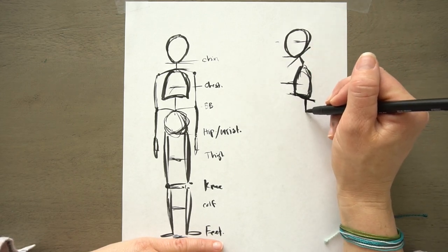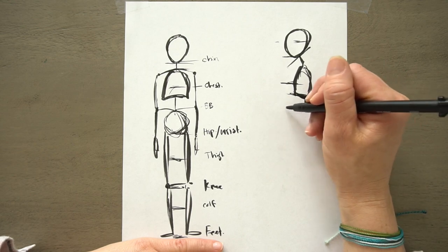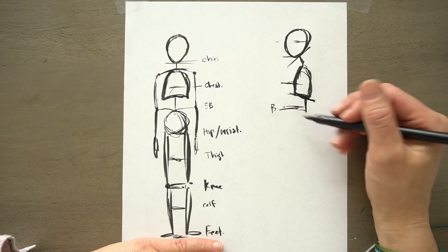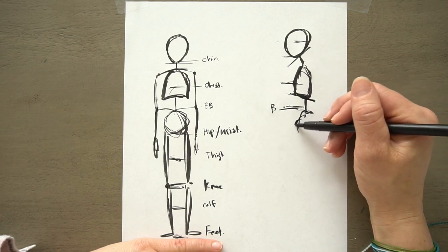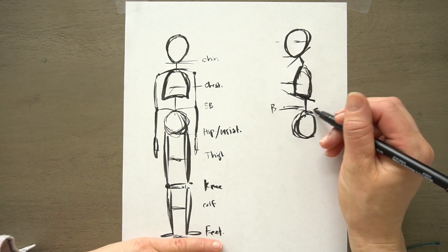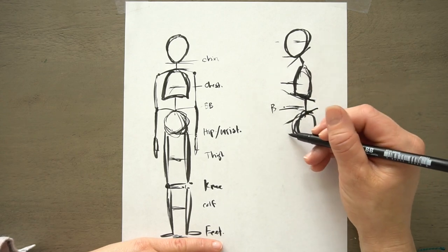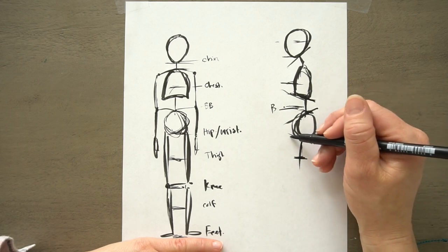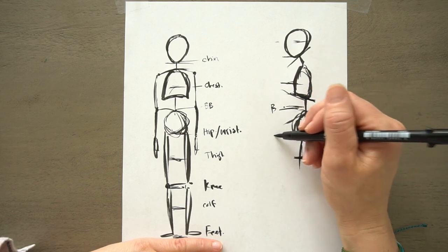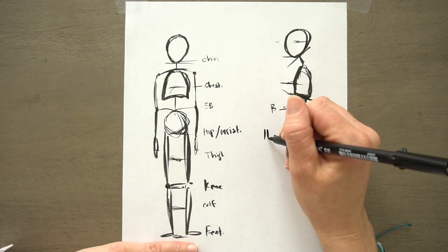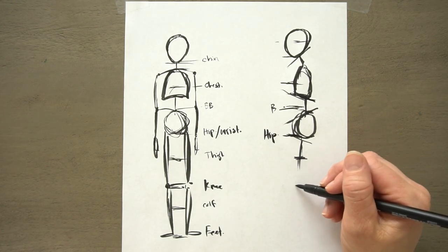And then where the belly button is, right here. I'll put the BB. Then I'm going to put this circle in again. Your hips kind of go down at this angle and then your thighs are going to come up. So the middle of your thigh would be about here. Belly button, legs come out. I'll just put wrist or hip. And then this would be the middle of the thigh.